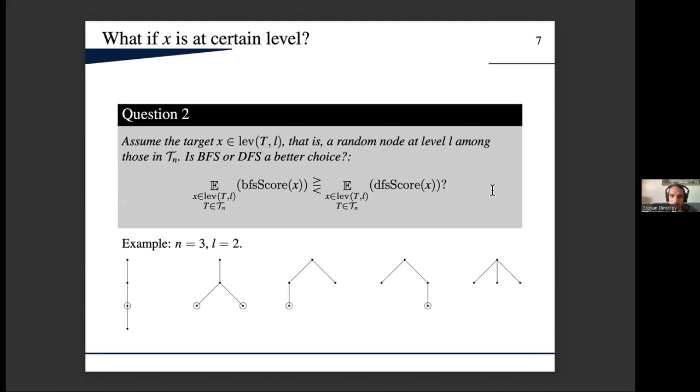That's good. When we have this case the situation is sort of trivial, but what if the target has a fixed level? Let's say our target is at certain level l. Then which of the two algorithms is better in expectation? We see here an example when n is 3 and l is 2. The target node could be one out of these five circled nodes, and we should pay attention also that distribution over the trees is not uniform anymore.